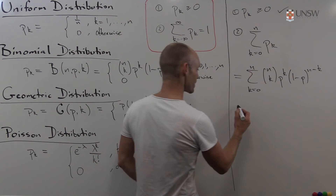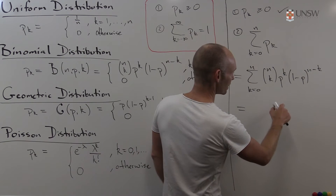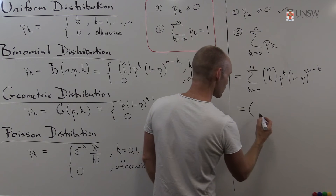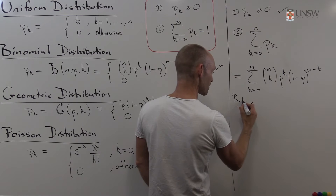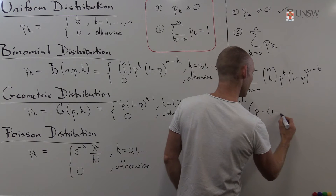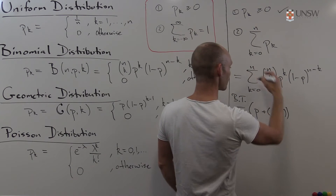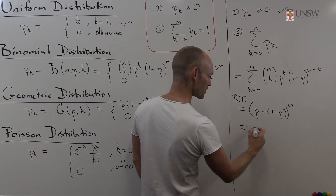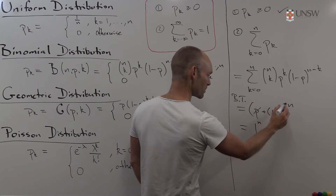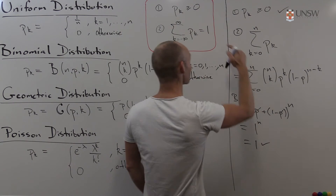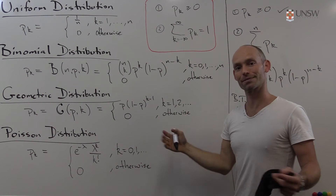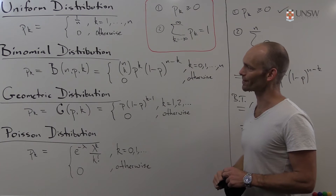If we use the binomial theorem, we see we've got p and 1 minus p. By the binomial theorem, that's equal to p plus 1 minus p, to the power of n. These add up to give 1, the p's cancel, and we have 1 to the power of n, which is 1. So this condition is satisfied, and this binomial function is in fact a probability distribution. We're halfway done!